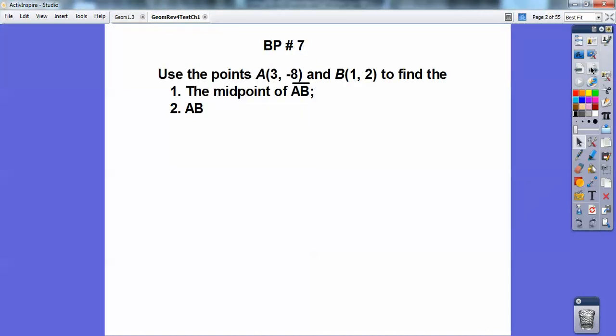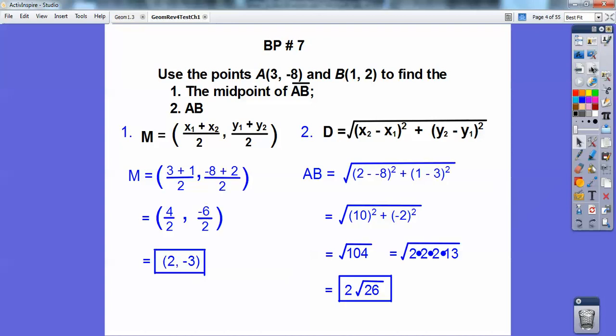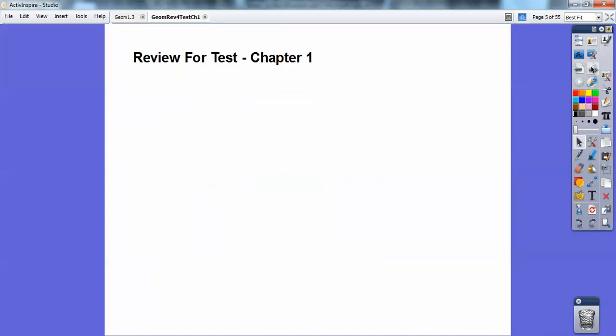Okay, let's first do the board problem. Use the points A(3, -8) and B(1, 2) to find the midpoint of segment AB and the length of AB. This says segment AB, and this with nothing on top of it means the length. So I'm going to use midpoint formula and distance formula. There they are. And if you do it correctly, those are the correct answers that you'll get. Okay, so let's review for this.